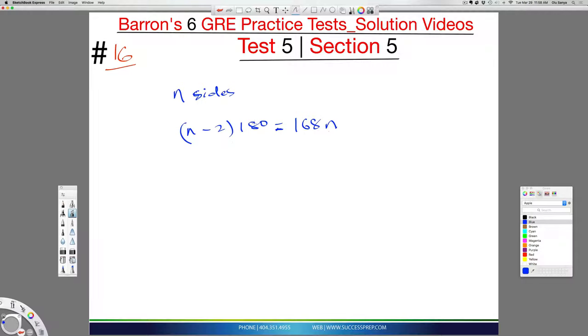Now multiply this 180 through, you're going to get 180n minus 360 equal to 168n. Now, obviously, we want to bring like terms together. So I'm going to bring 168 over here and 360 there. So this is 180n minus 168n equal to 360. And if you subtract this, you're going to get 12n equal to 360. And obviously, we can divide by 12 on both sides.